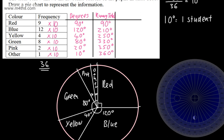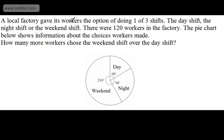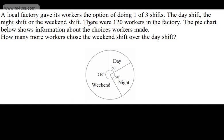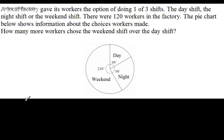Now let's look at interpreting a pie chart. A local factory gives its workers the option of doing one of three shifts: the day shift, the night shift, or the weekend shift. There were 120 workers in the factory. The pie chart shows information about the choices workers made. How many more workers chose the weekend shift over the day shift? We'll start by dividing 360 degrees by 120.